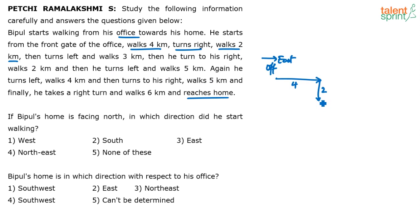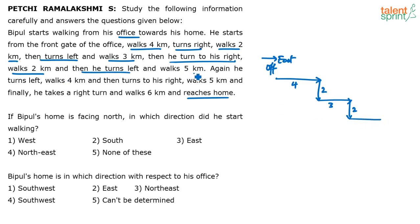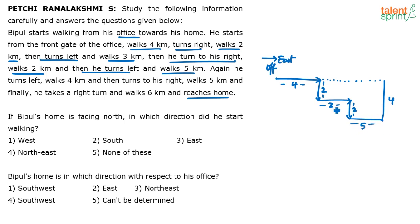He walks 4 kilometers, turns right, walks 2 kilometers, then turns left. Left for a person going south is towards the east, and he walks 3 kilometers. Then he turns right again — his right is towards the south — and walks 2 kilometers. Then he turns left, which is again towards the east, and walks 5 kilometers. Remember, this is all about direction sense — you should know what is left and right when facing east, west, south, or north.